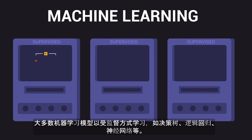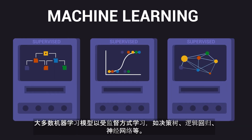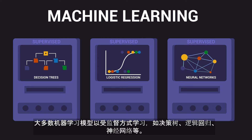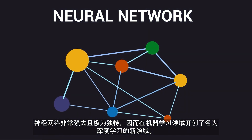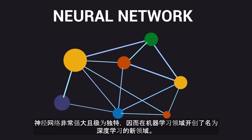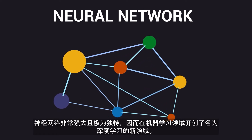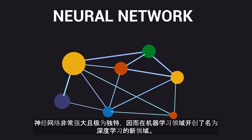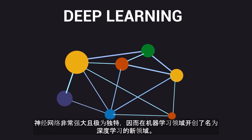Most machine learning models learn in a supervised manner, like decision trees, logistic regressions, and neural networks, among others. Neural networks are so powerful and unique that they originated a new field inside machine learning called deep learning.